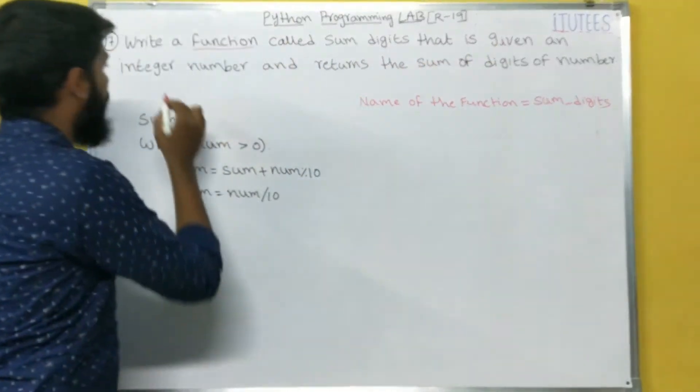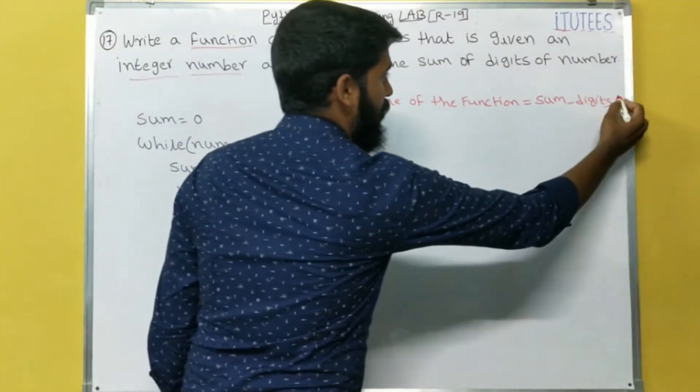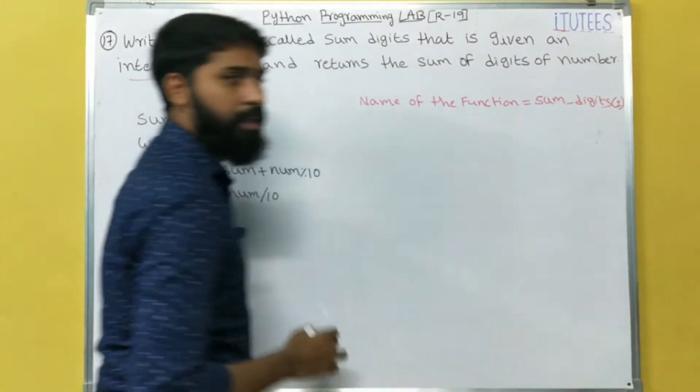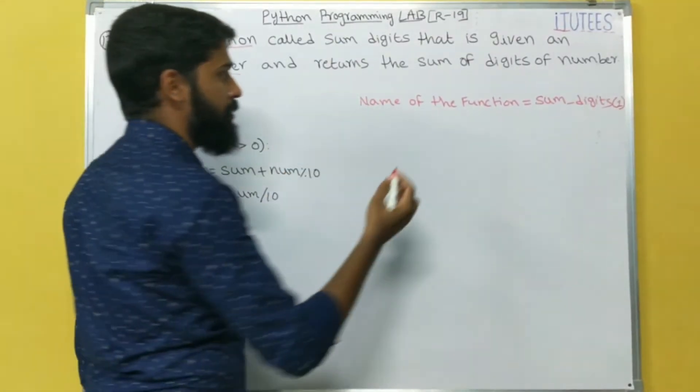That is given an integer number. So that means for this, we are going to give one argument. So that is integer. And returns the sum of digits of the number.